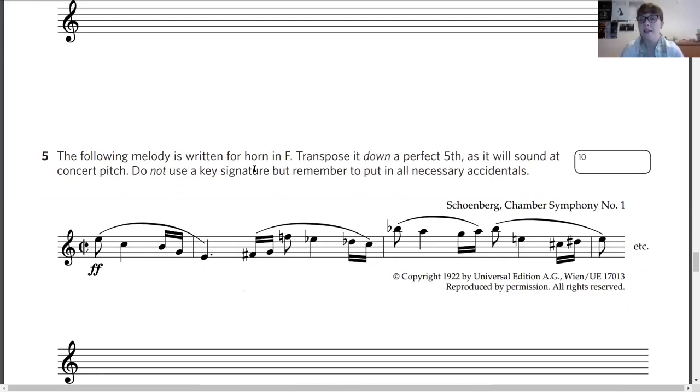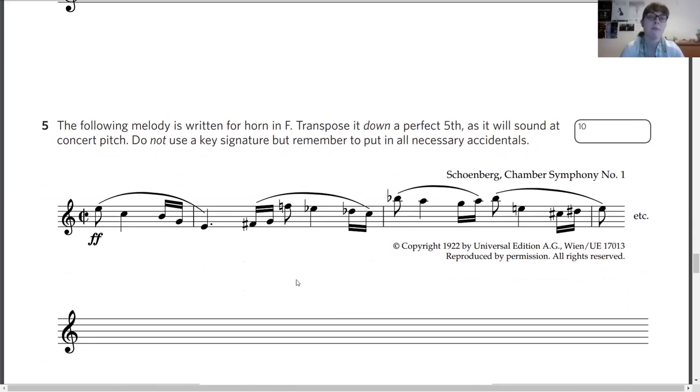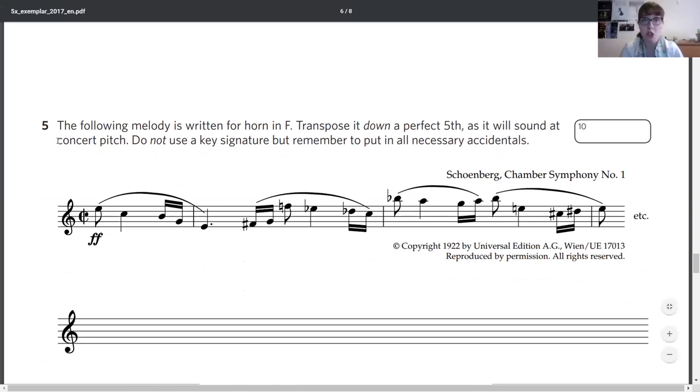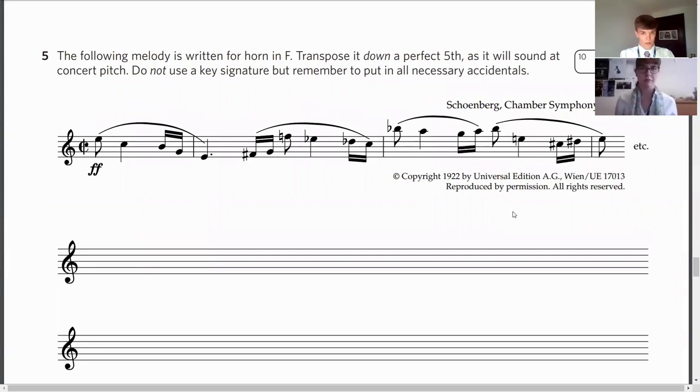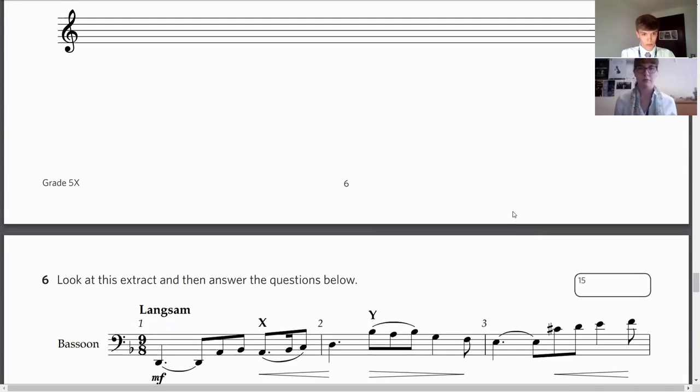Question five. This was always my least favourite question. The following melody is written for a horn in F. Transpose it down a perfect fifth, as it will sound at concert pitch, but don't use the key signature and put in all the necessary accidentals. First things first, we can immediately put in our time signature. What I do is for every single note, I'd go down a perfect fifth. Everything needs to change and your accidentals will also need to change. As you've not got a key signature, we don't need to worry about that getting in the way or anything. They've told us exactly how to do it, so just take your time.